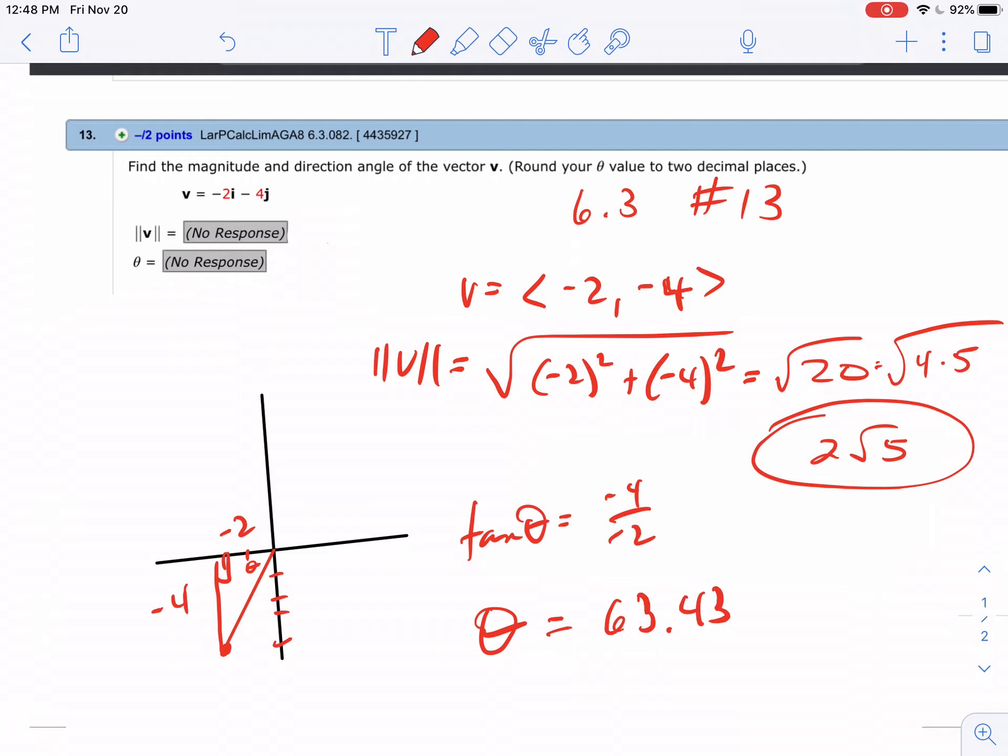Now, remember that that theta is the one that's sitting there. But 63 degrees doesn't mean the direction is in the third quadrant. So we have to go all the way around to here. So it's really after 180, how far have you gone? So I have to add 180 to this. And so you're looking at 243.43.